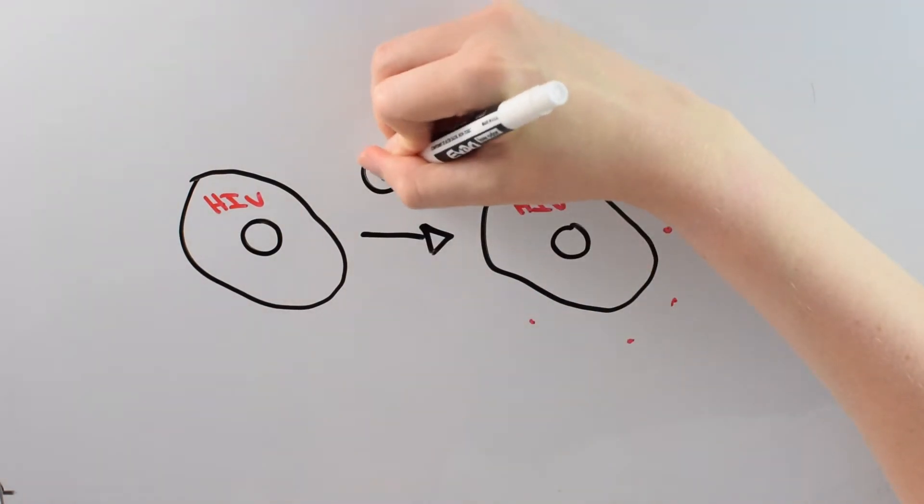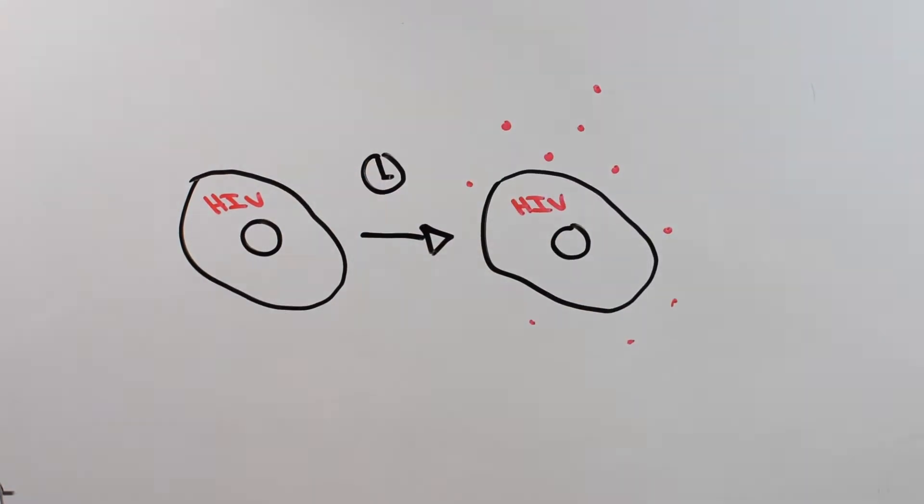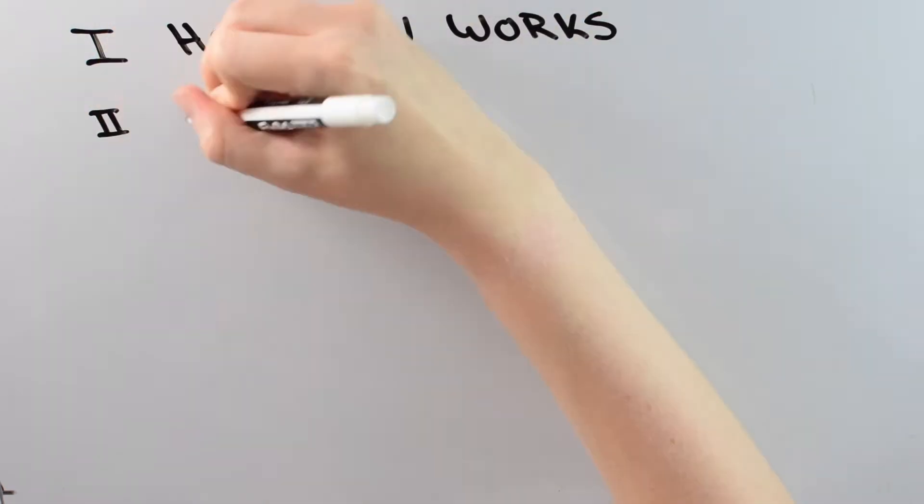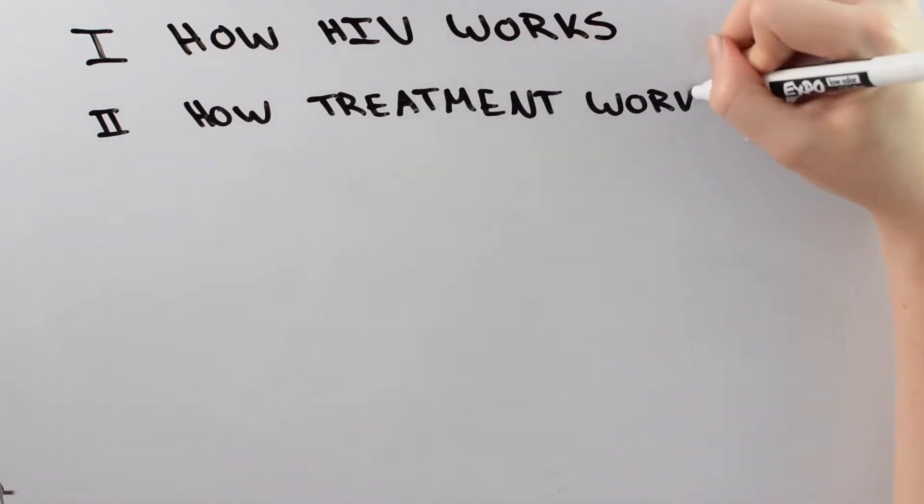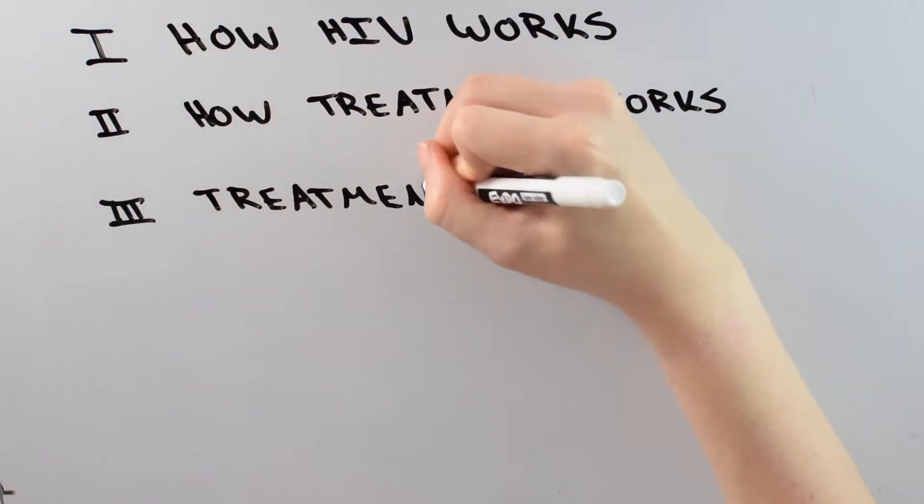Part of the reason that HIV is so hard to cure is that it can become latent, meaning that a cell infected with HIV doesn't make any virus right now, but it could at some later point. To better understand latency and the problem with curing HIV, we need to understand three things. How HIV works. How our current treatment works. And why the treatment that we have right now isn't a cure.